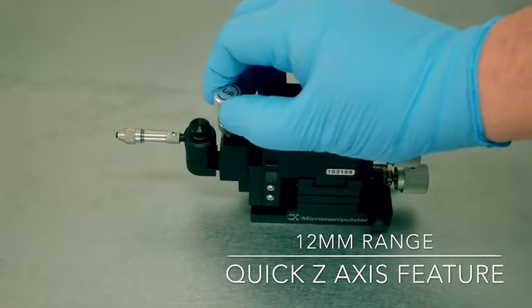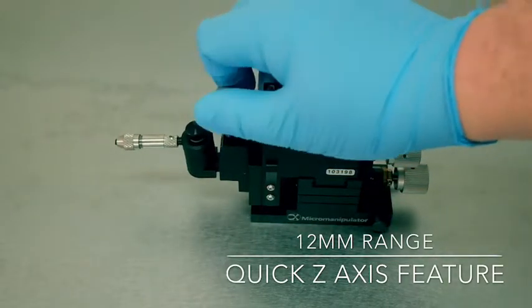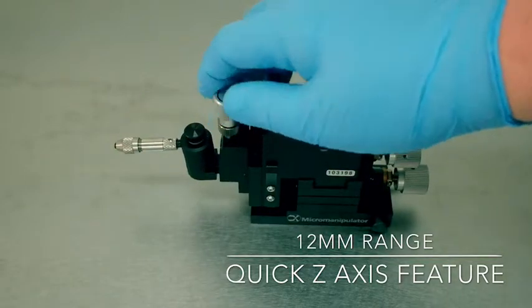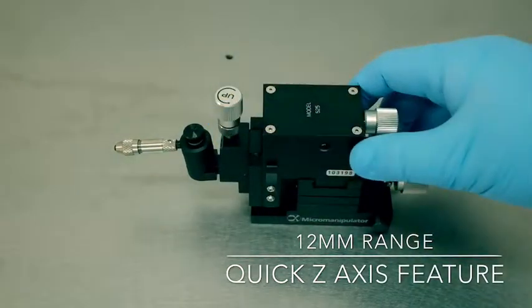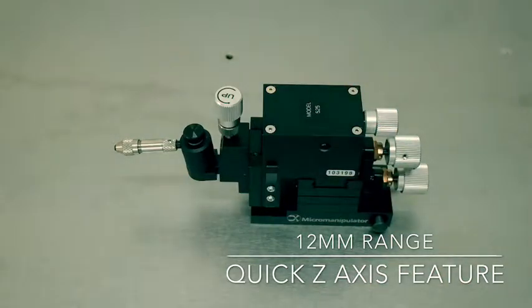This positioner also has a quick Z feature which allows you to get on target quickly. It is best suited for 1 micron or greater geometries, available in both magnetic or vacuum base.